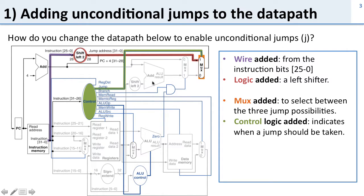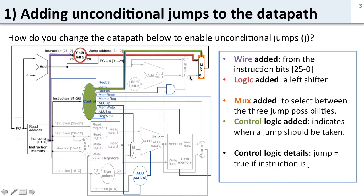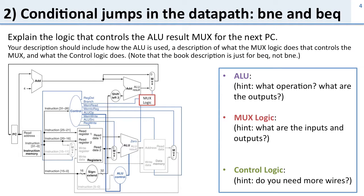We need some control logic, and the control logic has to tell us which branch we take — which instruction we use next. The jump control will choose whether we did a jump, a conditional branch, or just the next instruction.